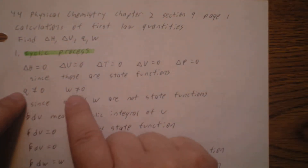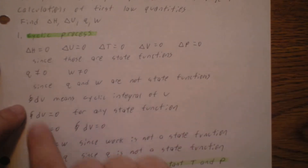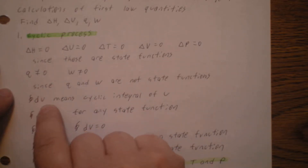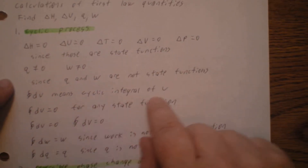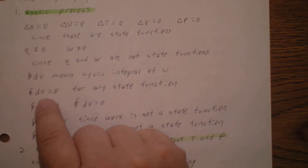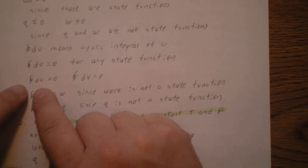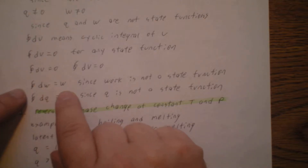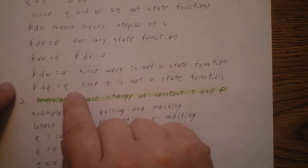On the other hand, Q will not be equal to zero and work will not be equal to zero, because heat Q and W are not state functions. For a cyclic process we write an integral sign with a circle through it — the cyclic integral of dU equals zero for any state function. The cyclic integral of dV also equals zero. But the cyclic integral of dW equals the work done, and the cyclic integral of dQ equals Q, since neither is a state function.